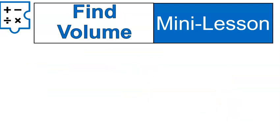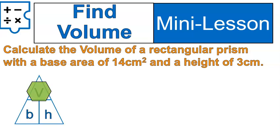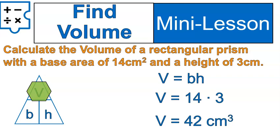First off, in this one we're going to calculate volume. Calculate the volume of a rectangular prism that has a base area of 14 square centimeters and a height of 3 centimeters. This one's pretty straightforward. If we're using our pyramid, we are calculating volume, so we will be doing base times height, and we just plug in the numbers: 14 square centimeters times 3, which gives us 42 cubic centimeters.